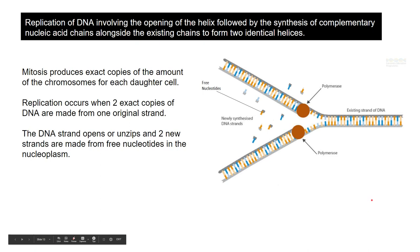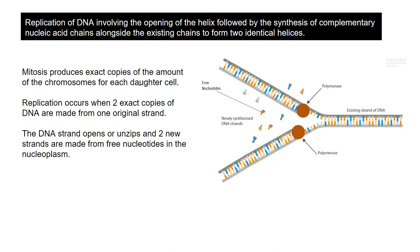Now looking at how DNA replicates. This involves the opening of the helix followed by the synthesis of complementary nucleic acid chains alongside the existing chains to form two identical helices. Nucleic acid means DNA or RNA. You remember that mitosis produces exact copies of the chromosomes for each daughter cell. DNA replication occurs when two exact copies of the DNA are made from one original strand. DNA replication happens before mitosis begins.